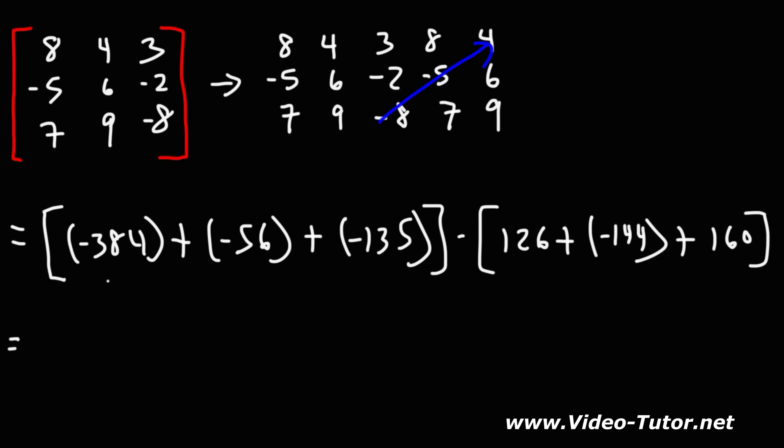So, now, let's do the math. Let's add those three numbers. Negative 384 plus negative 56, or just minus 56, minus 135. That's going to be negative 575. 126 minus 144 plus 160, that's going to be 142.